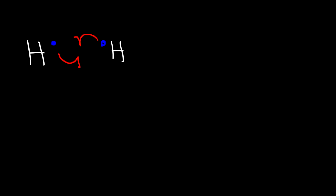What is the difference between a polar covalent bond and a non-polar covalent bond? First you need to know what a covalent bond is and how it differs from an ionic bond. In a covalent bond, electrons are shared. For example, when two hydrogen atoms combine, they form a covalent bond.